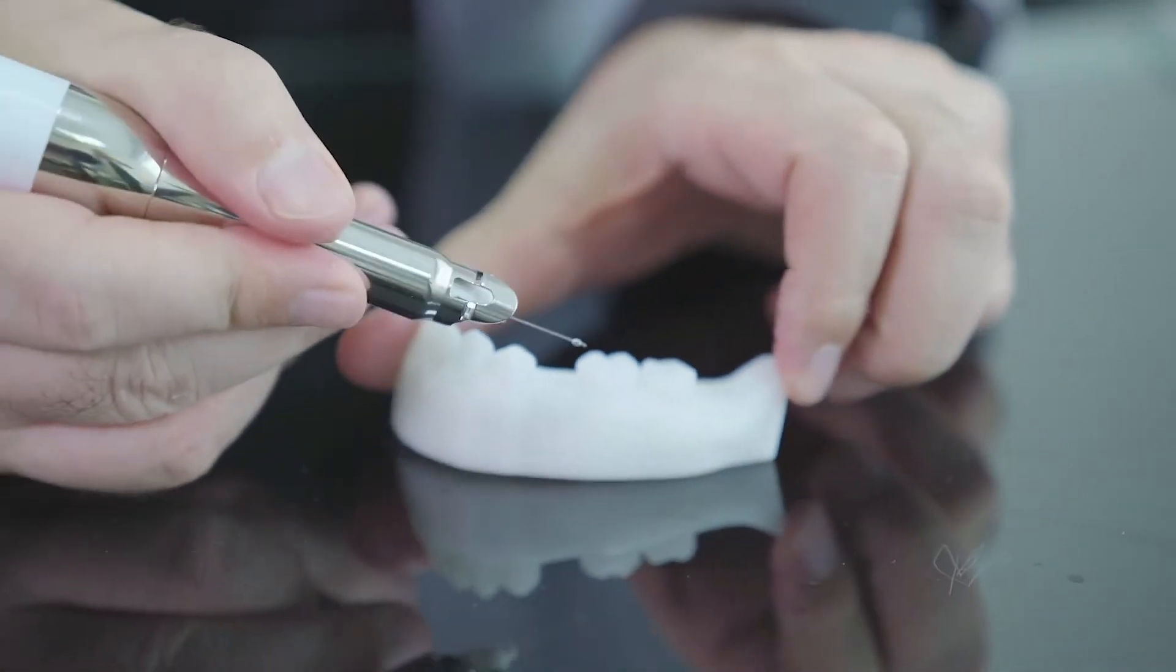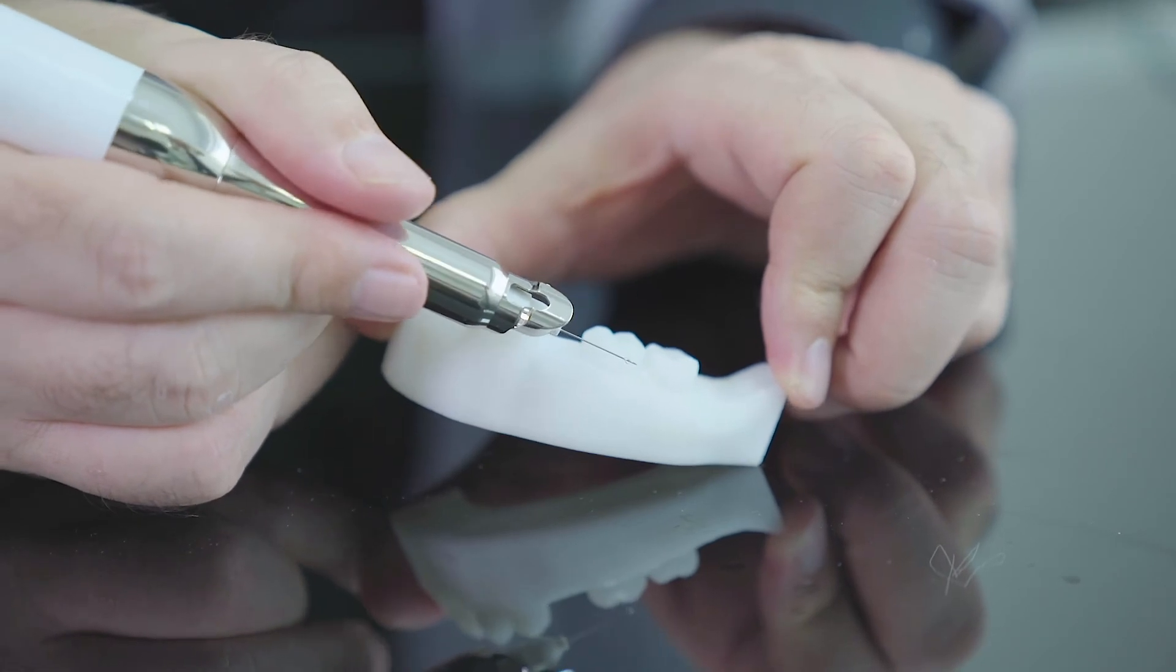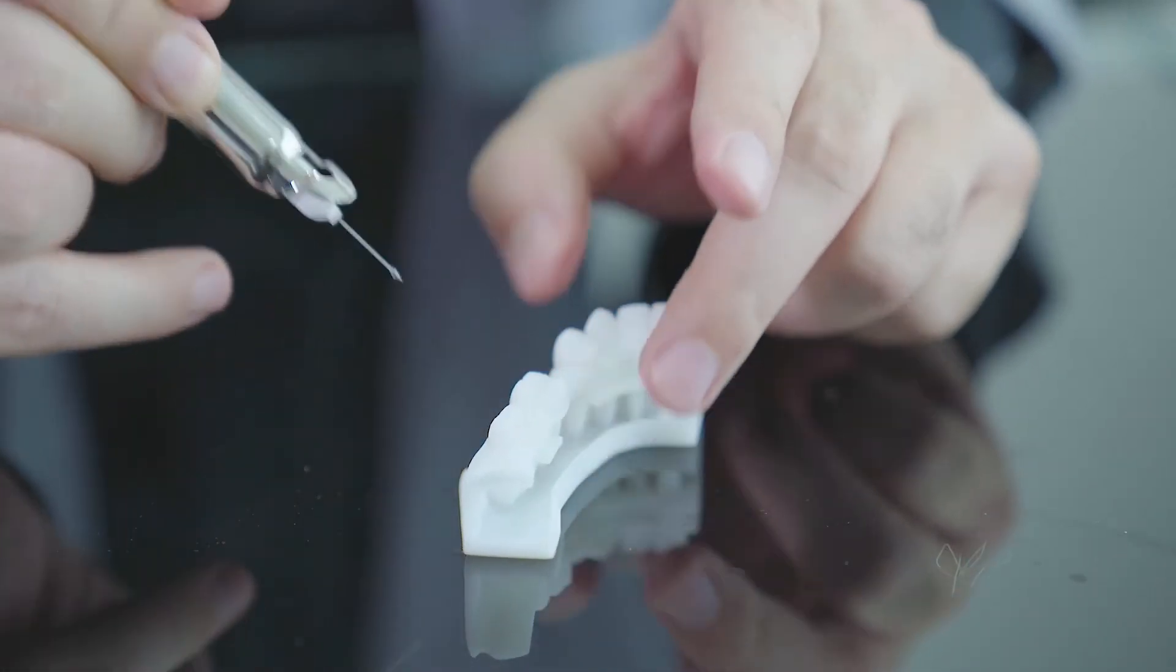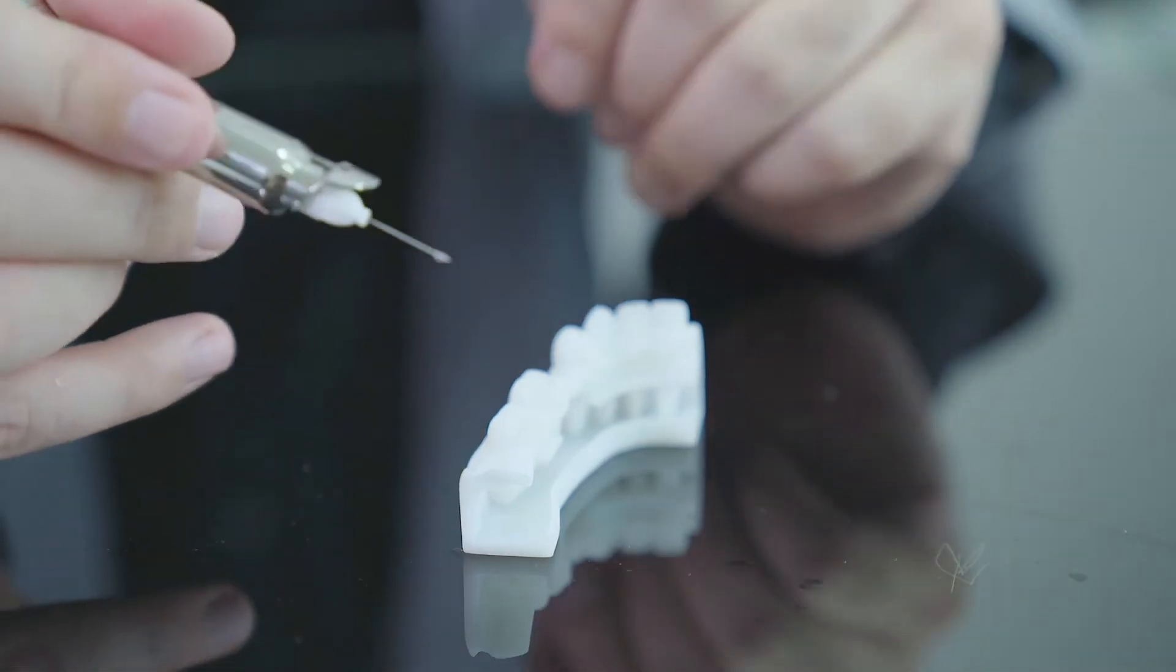So simply penetrate, go to the tissue, anesthetize. Second, drill the bone, then inject inside the cancellous bone. That's all with Quick Sleeper.